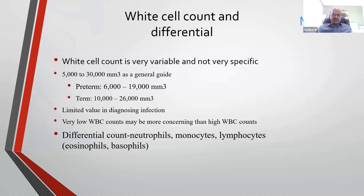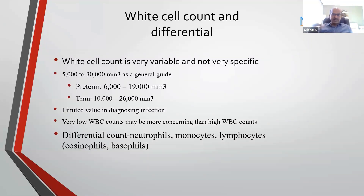Leukopenia is more significant as a marker of sepsis than neutrophilia. In differential counts, we look at neutrophil count; monocytes and lymphocytes are not as predominant in neonatal sepsis. If you are thinking of a NEC-like presentation in a premature baby, a high eosinophil count makes you think of milk protein intolerance. Lymphocyte predominance can suggest a viral infection, which can often masquerade as sepsis.